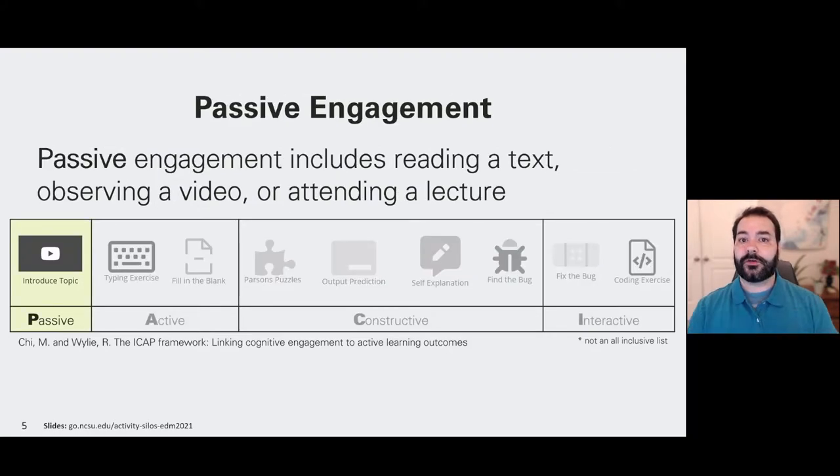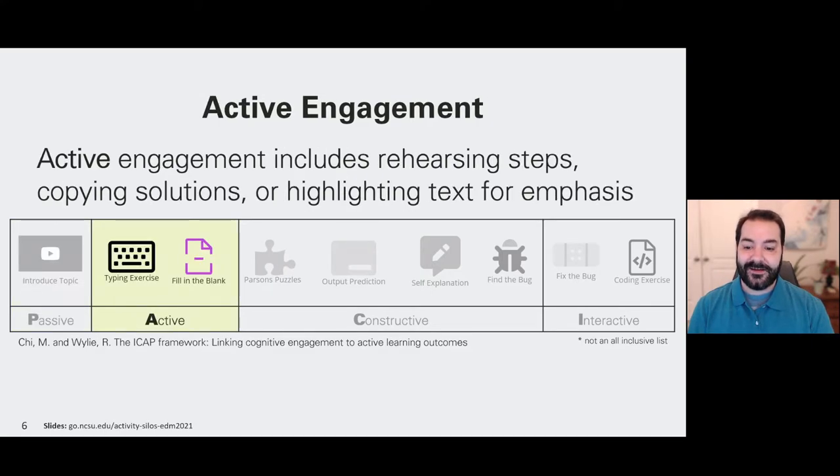For example, you're currently watching a video that I'm starring in and it's a passive activity. You simply need to just sit back, relax, and hopefully learn something. But then we can add in a little engagement. A typing exercise requires students to look at source code and then physically retype that code out. They can't copy and paste it. This is very similar to rehearsing your lines as an actor or practicing scales as a musician or learning to play an instrument.